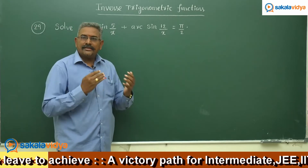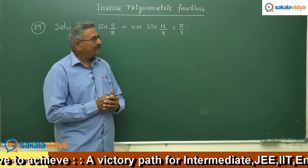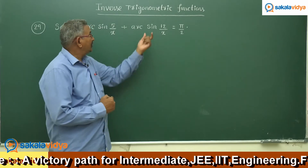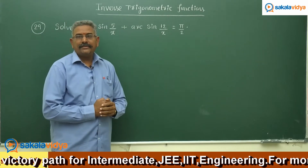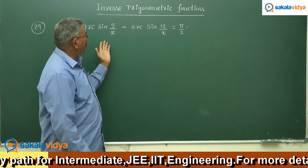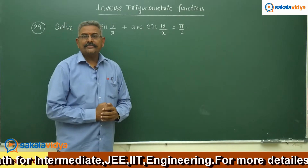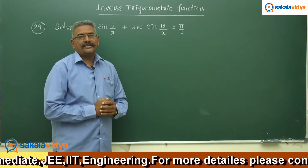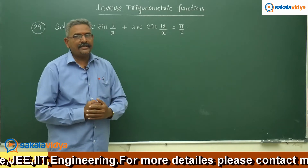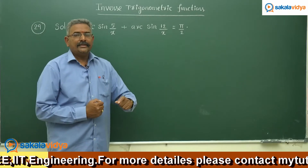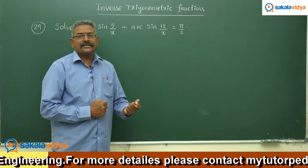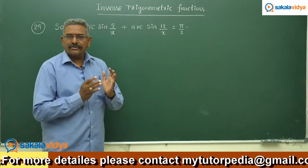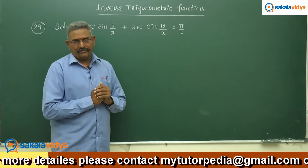Let us proceed in this manner: let sine inverse(5/x) equal a, so sine a equals 5/x; and let sine inverse(12/x) equal b, so sine b equals 12/x. Then a plus b equals 90 degrees. So a equals π/2 minus b. Apply sine on both sides: sine a equals sine(90° − b), which becomes cos b. It is better to express cos b in terms of sine b so we can substitute and find x.